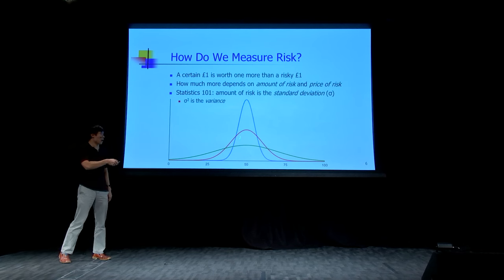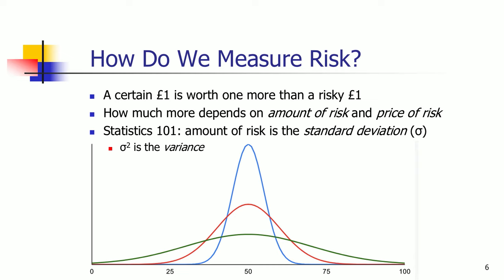Let's take three different companies that on average all make a profit of £50. The blue company is pretty safe — you're pretty sure you're going to get £50, give or take five. The green company is very risky — there's a big chance you'll get over £75 but also a chance you'll get below £25 or even zero. Standard deviation measures how spread out the distribution is, where the green has the highest standard deviation and is most risky. That's what we learn in GCSE maths, and it seems to make sense. But it turns out that is not the way to measure risk in finance.